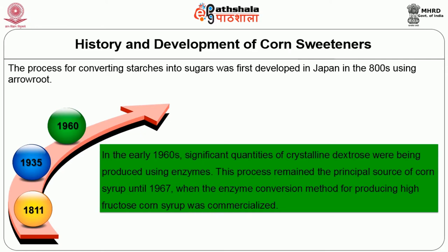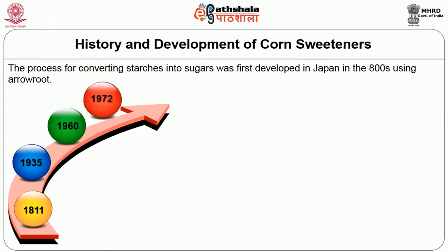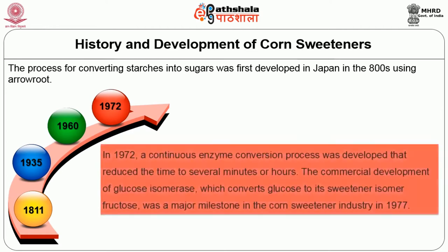When corn syrup was acid converted to higher degrees of hydrolysis, the resulting products were often highly discoloured and contained bitter byproducts from the acid-mediated reaction. In the early 1960s, significant quantities of crystalline dextrose were being produced using enzymes. This process remained the principal source of corn syrup until 1967, when the enzyme conversion method for producing high fructose corn syrup was commercialized. At first, this was a batch process requiring several days. In 1972, a continuous enzyme conversion process was developed that reduced the time to several minutes or hours. The commercial development of glucose isomerase, the most predominant enzyme used in fermentation technology which converts glucose to its sweeter isomer fructose, was a major milestone in the corn sweetener industry in 1977.